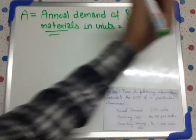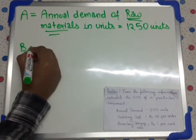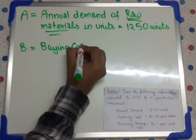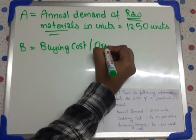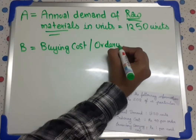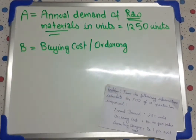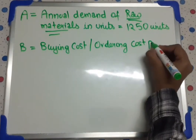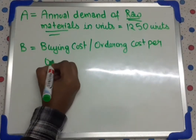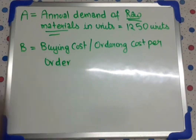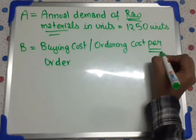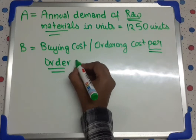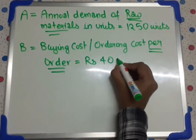Now the next one. B — what is B? B is buying cost or ordering cost per order. We have to always remember it is buying cost or ordering cost per order. And the value given in the question is rupees 40 per order.